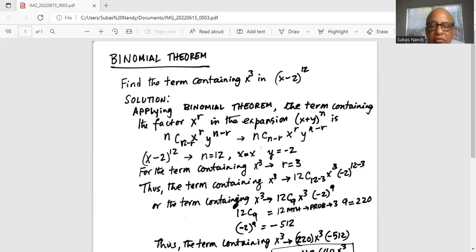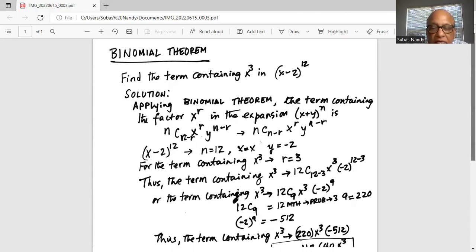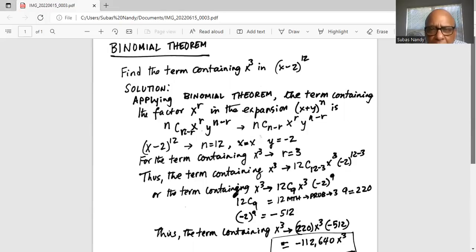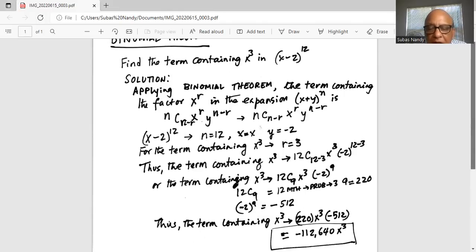And minus 2 exponent 9: since the exponent is an odd number, -2^9 will contain a minus sign, and 2^9 is 512. So the term containing x^3 in (x-2)^12 is minus 220 times x^3 times 512.